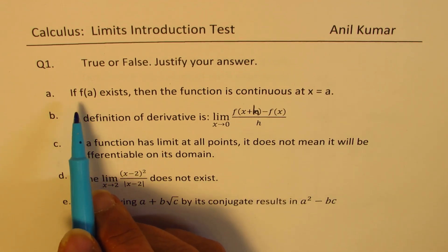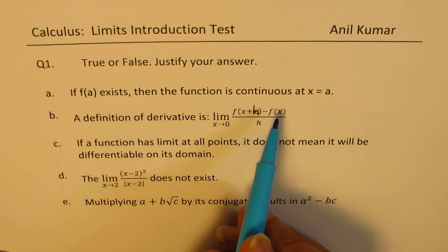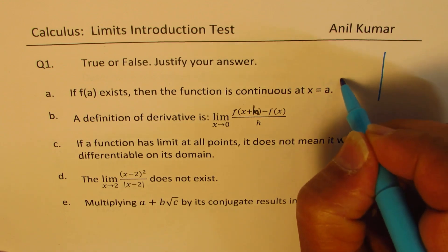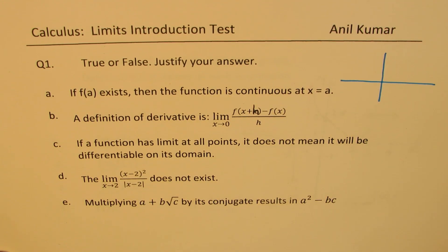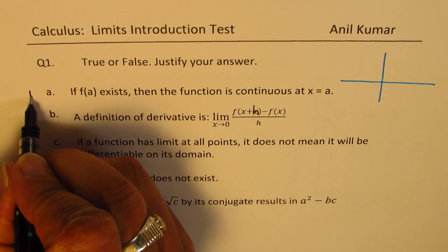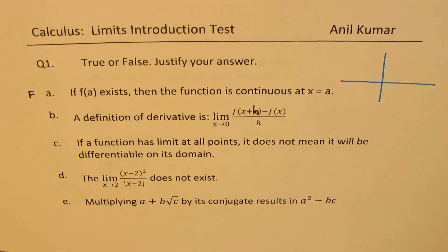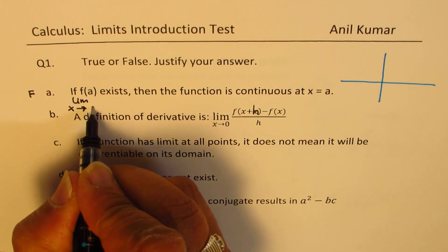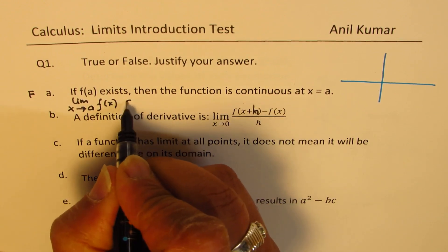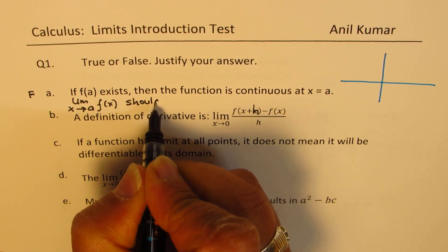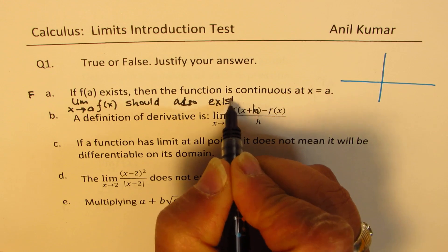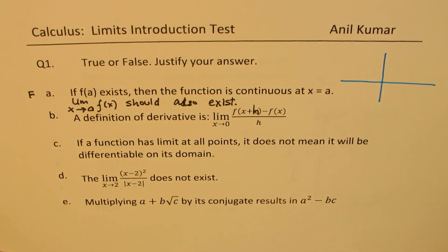The very first one: if f of a exists, then the function is continuous at x equals to a. I think this statement is not true — it is false. There is another condition which should be met, and that is the limit as x approaches a for the function f of x should also exist. The second condition is also important for a function to be continuous.